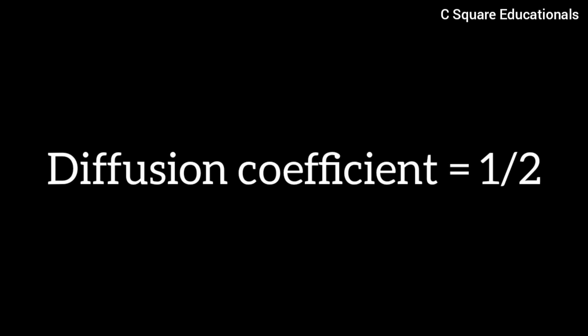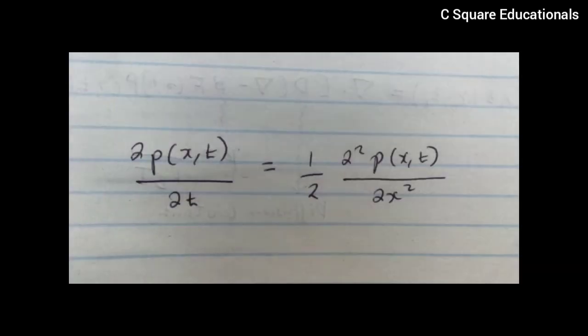Here the drift term is zero and the diffusion coefficient is half. Thus the corresponding Fokker-Planck equation is partial p(x,t) on partial t equivalent to half partial squared p(x,t) on partial x squared. This is the simplest form of a diffusion equation.